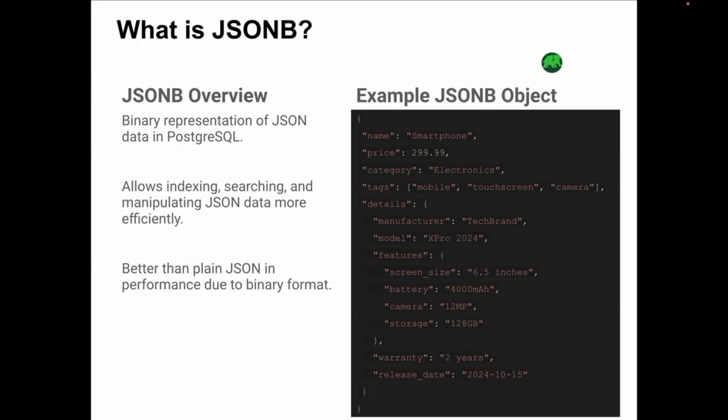Let's focus on JSONB. JSONB is perfect for product attribute storage because it provides flexibility and speed. Instead of rigid table structures, you can store dynamic key-value pairs directly within your database. This makes it ideal for scenarios where each product might have different attributes. JSONB in PostgreSQL is a binary representation of JSON data.